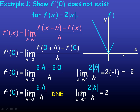Looking at the graph of the absolute value function, it looks like a V. On the left side the tangent line slope is −2, and on the right side it's +2. The fact that the two limits are not the same is why the limit doesn't exist at 0 — just like the corner or cusp example. At any corner or cusp, the derivative is not defined.